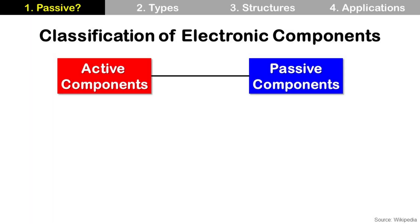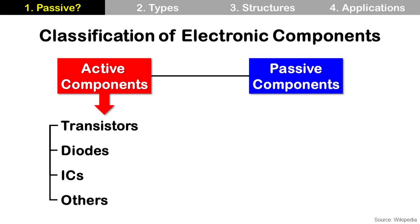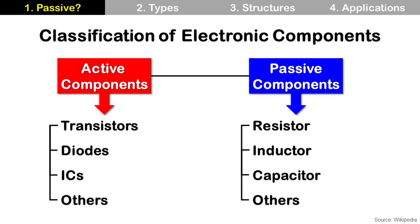In electronic components, there are two major categories: active components and passive components. Active components include transistors, diodes, ICs, and others. Passive components include resistors, inductors, capacitors, and others.